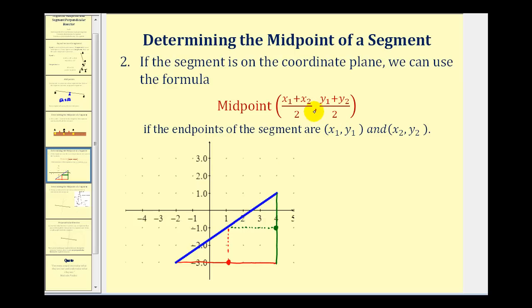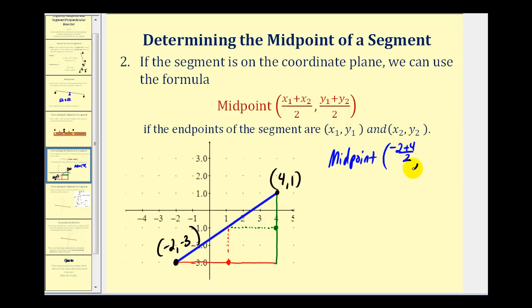Let's apply this formula using the endpoints of this segment. One endpoint is the point (−2, −3) and the other endpoint is (4, 1). So the midpoint is ((−2 + 4) / 2, (−3 + 1) / 2). That gives us (2/2, −2/2), which equals (1, −1). So the midpoint is the point (1, −1), which we'll label M on the graph.